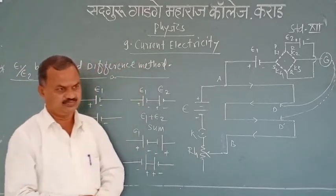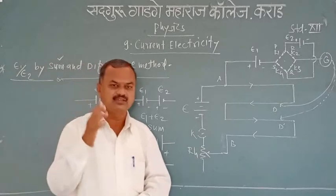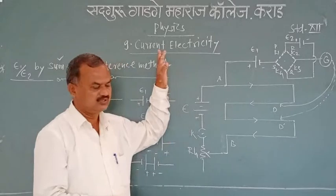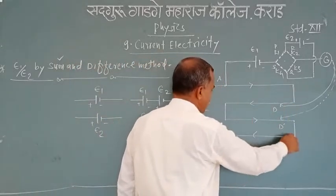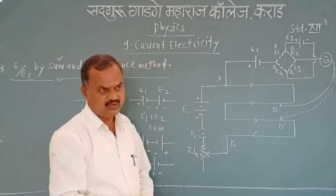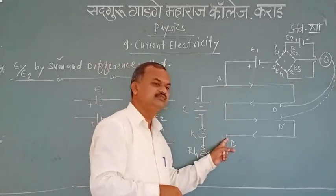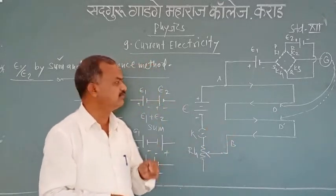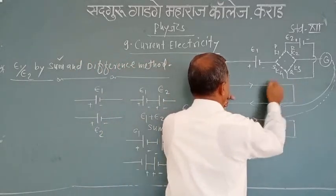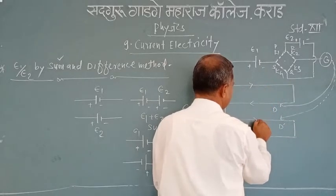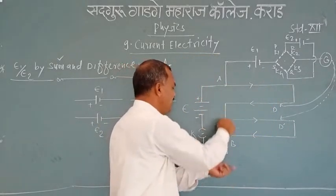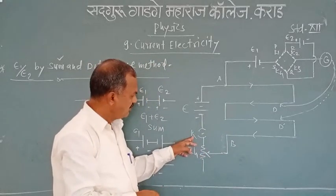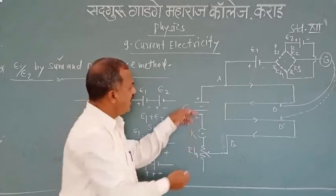The circuit diagram for determination of E1 divided by E2 using the sum and difference method is as shown on the blackboard. This is the potentiometer wire stretched on a wooden board between two points A and B, having four equal segments each of one meter in length — first, second, third, and fourth segments.